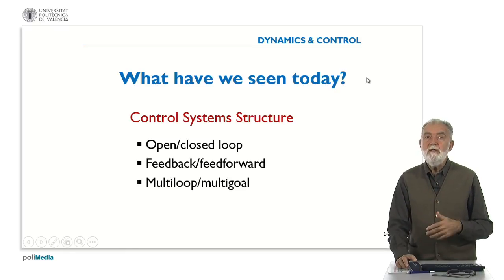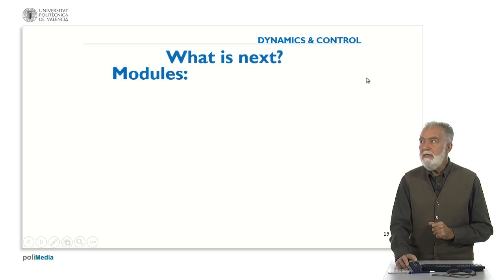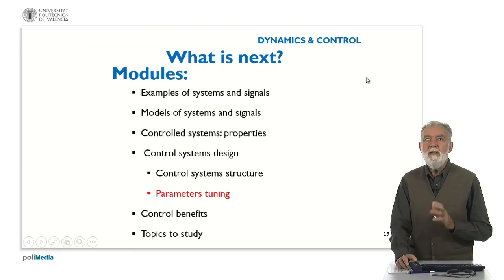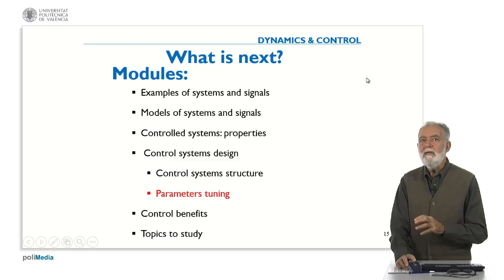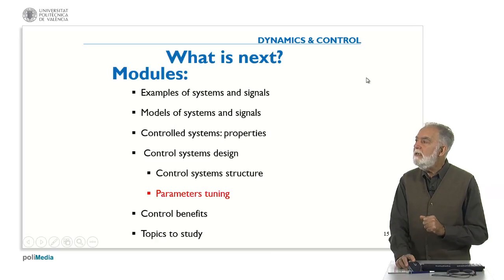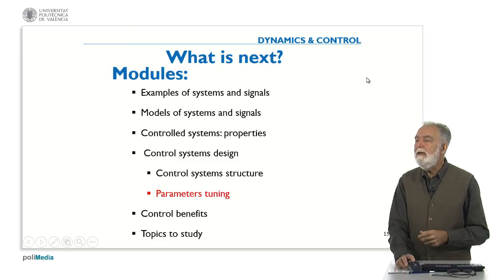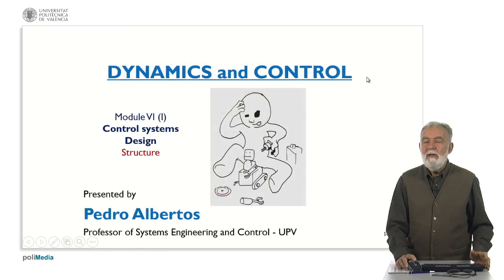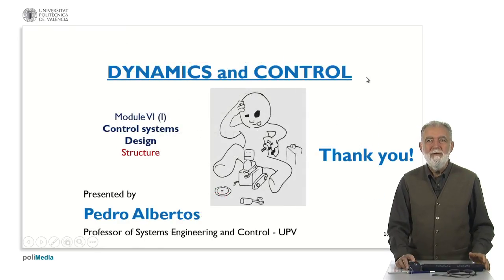We may have just one single loop or multi-goal structures. Once we have defined the control subsystem, it should have some parameters that we must adjust. The computation of these parameters is rather complicated, but in the next session we will see some general ideas about how to tune or how to define these control system parameters. That's all for today, thank you.